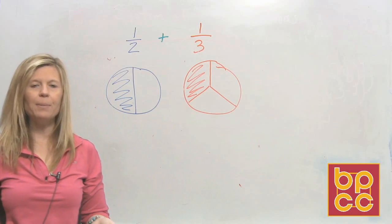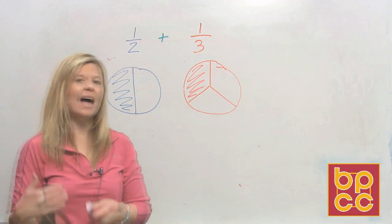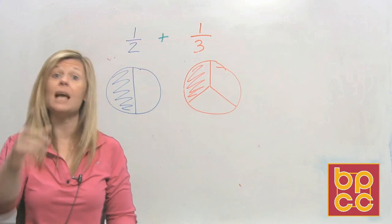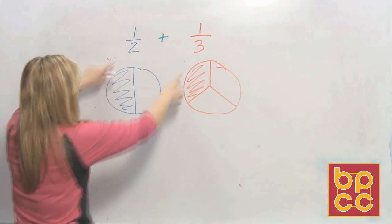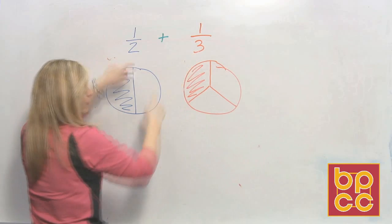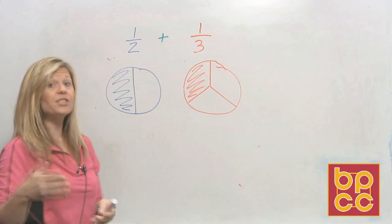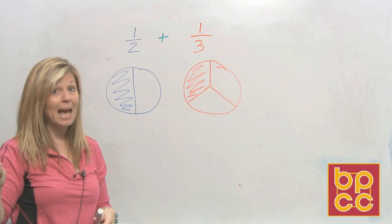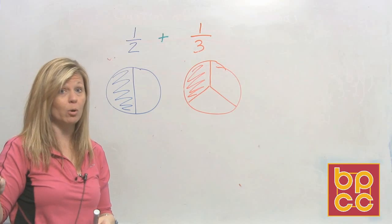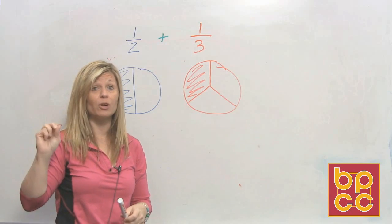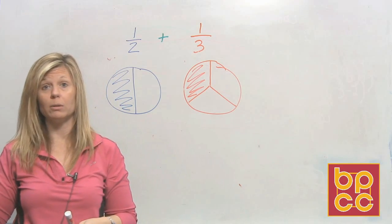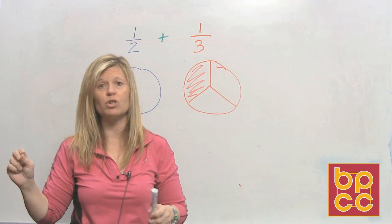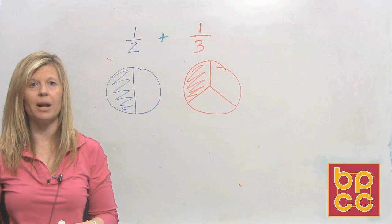So what happens is we learn a rule: adding fractions easy as can be, all you need is an LCD. We need a least common denominator. LCD is the same thing as an LCM from third grade. LCM stands for lowest or least common multiple. LCD is the same concept — we're just using a D because now the numbers are in the denominator.